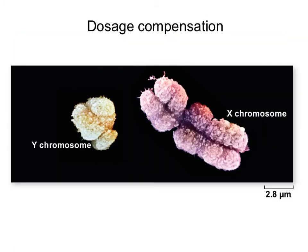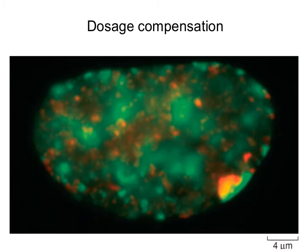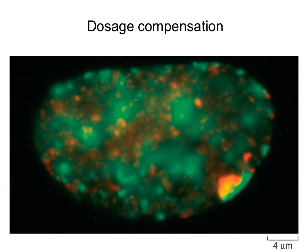Here we can see the relative size difference between the X and Y chromosomes. Most of the genes on the X chromosome are not present on the Y chromosome, so they won't be transcribed from the Y chromosome. As a result, in females one of the X chromosomes is inactivated. We see that as a Barr body — one of the X chromosomes gets compressed, highly compacted around the protein, and cannot be accessed for transcription.